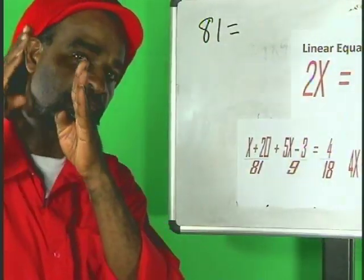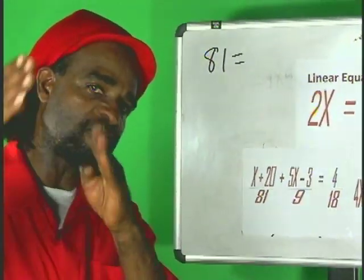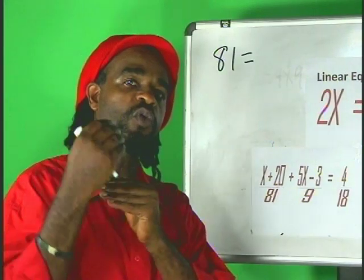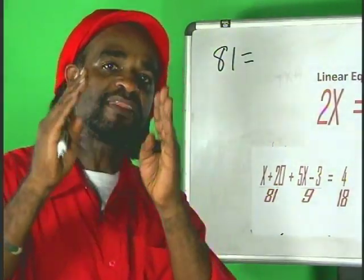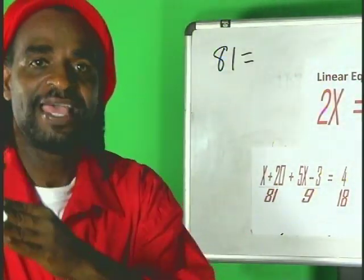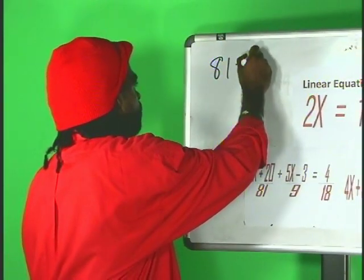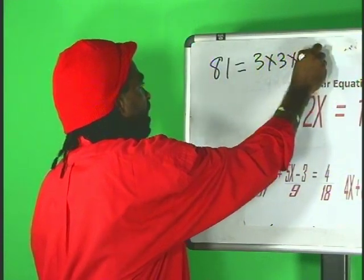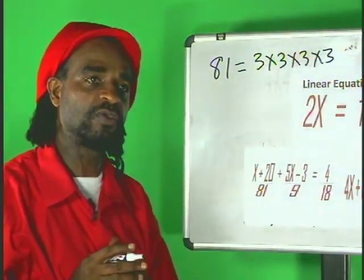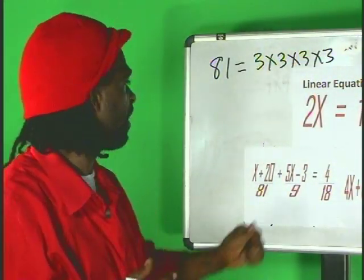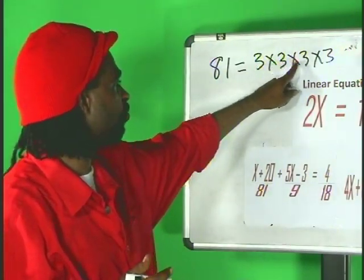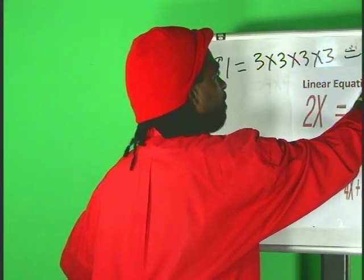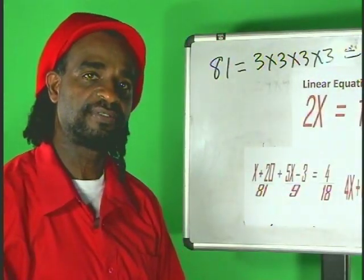In finding the LCM, we are going to write 81. We are going to express 81 as a product of prime numbers. What are prime numbers? Prime numbers are those numbers divisible by one and itself. So, 81 would be nothing but 3 times 3 times 3 times 3. We have 3 to the 1 times 3 to the 1, which is 3 to the 4th power. That's 81.